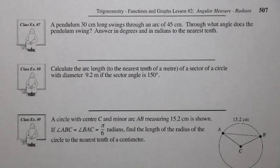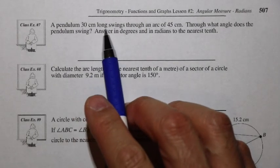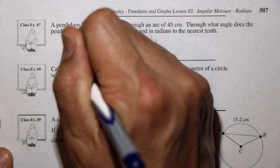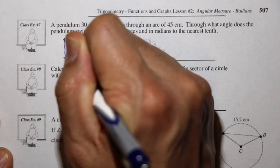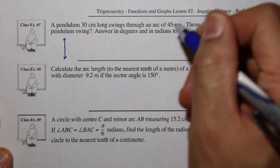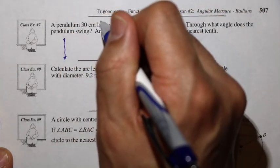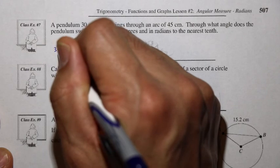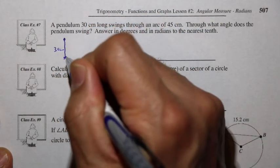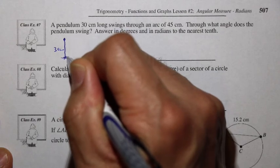Let's look at class example number 7. A pendulum 30 centimeters long swings through an arc of 45 centimeters. Through what angle does the pendulum swing? Answer in degrees and in radians to the nearest tenth. The pendulum is 30 centimeters long, which acts as the radius, swinging from a center pivot point.